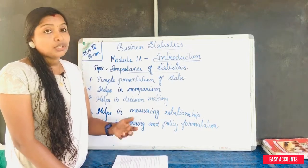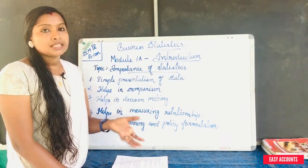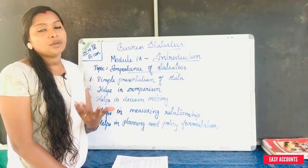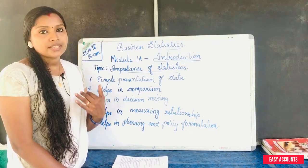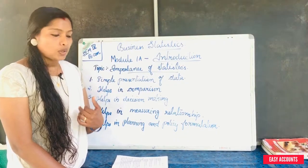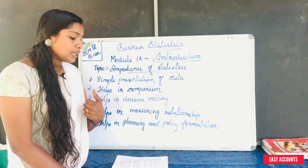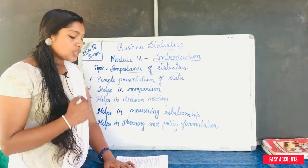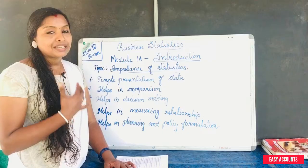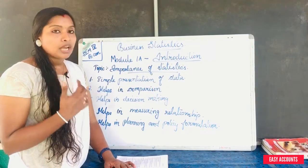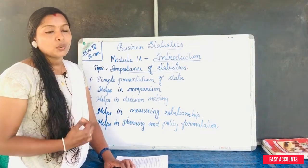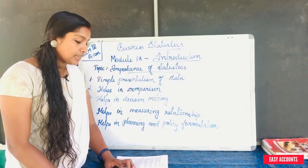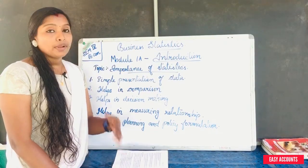What we call techniques and methods is data analysis and interpretation — methods and techniques of statistics. Using these, we are able to get a conclusion, and from the conclusion we are able to make a good decision. That is, decision making is one of the most important aspects of statistics.